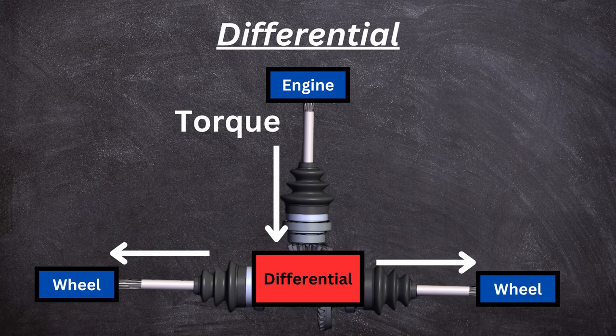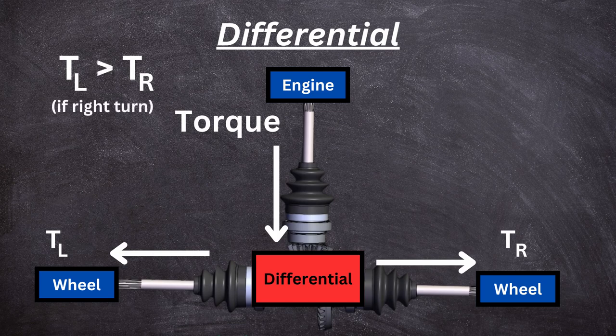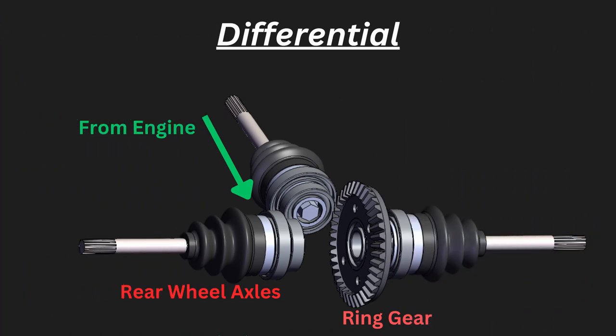The function of the differential is to distribute torque between the two axles depending on what the car is doing. If the car is going straight, it divides the torque evenly. Whereas if the car is making a specific turn, the outer wheel receives more torque than the inner wheel, giving it more speed.